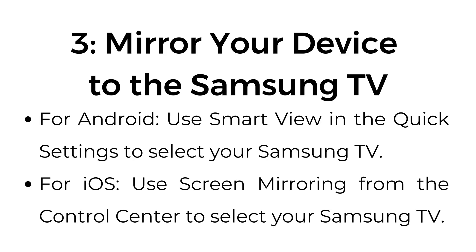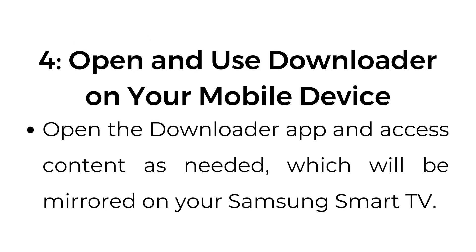Step number three: mirror your device to the Samsung TV. For Android, use Smart View in the quick settings to select your Samsung TV. For iOS, use screen mirroring from the control center to select your Samsung TV. Step number four: open and use the Downloader app on your mobile device. Open the Downloader app and access content as needed, which will be mirrored on your Samsung Smart TV.